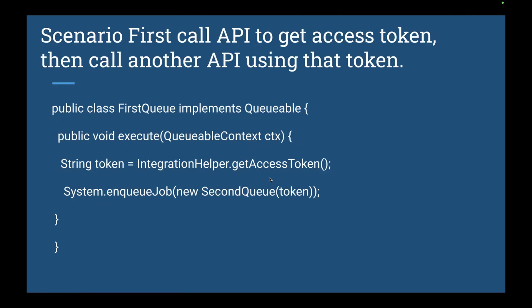The next scenario is: first call an API to get an access token, then make another API call using that token. Two API calls are required — the first call retrieves the access token from the third-party application, and then using that token we hit the endpoint URL to get access. We implement a Queueable class where the execute method first calls the integration helper to get the access token, then enqueues a second job that makes the next API call.